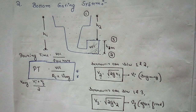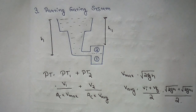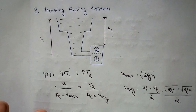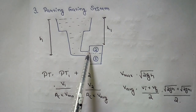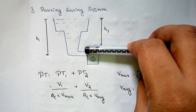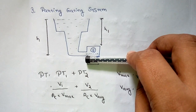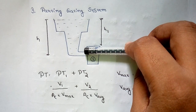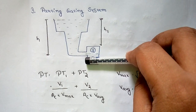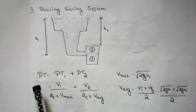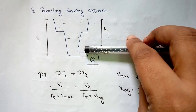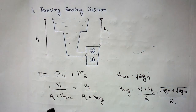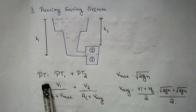For the parting gating system, the ingate enters from the middle of the mold cavity. This system is simply the combination of the top gating system and the bottom gating system. If we neglect the lower half, it becomes a top gating system; if we neglect the upper half, it becomes a bottom gating system. Therefore: PT_total = PT1 + PT2, where PT1 uses the top gating formula with volume V1 and Vmax = √(2gH).